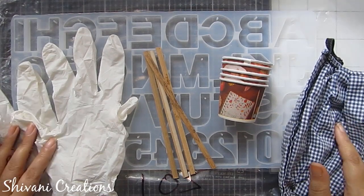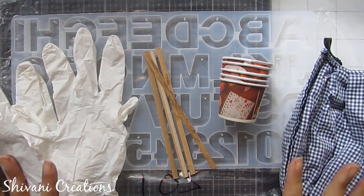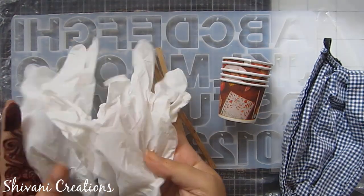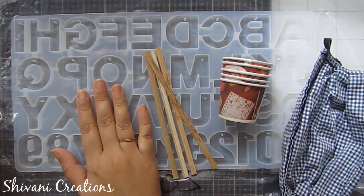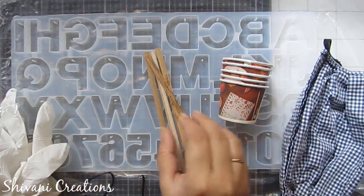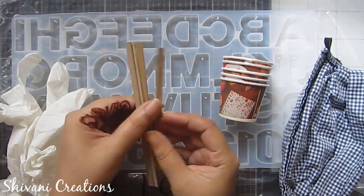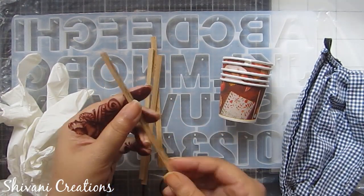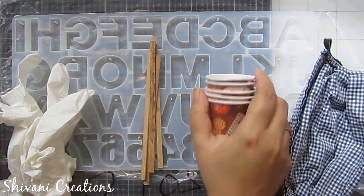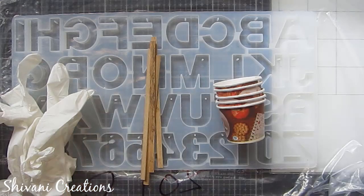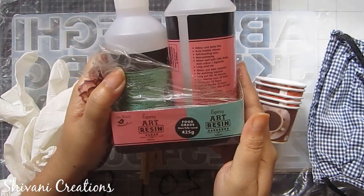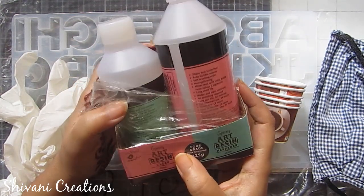There are some things which you must need to arrange before starting with the resin work. First you need to arrange the gloves, these are very important. Then any mold on which you are working, today I am making keychains so I am taking alphabet molds. Then you need some sticks, any wooden sticks or ice cream sticks will work. Then we need some paper cups of small size and the mask is also compulsory to work with resin. Then here I am using the art epoxy resin by Little Birdie.